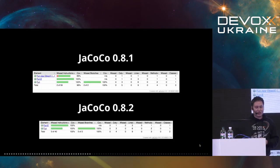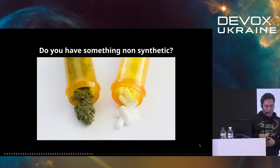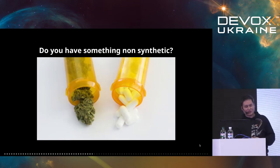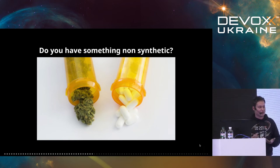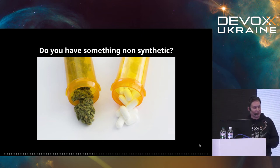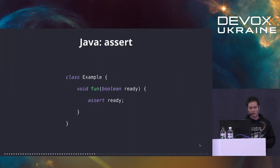Again, you need to filter this out — you need to ignore this code because there is nothing in it. At this moment you might start wondering: so far you showed us only synthetics. Do you have something which is not synthetic? Well, not me, but in Java compilers there is plenty. So let's have a look.